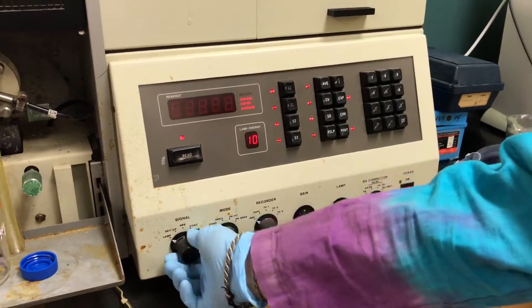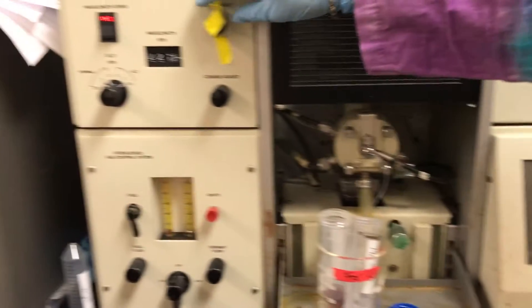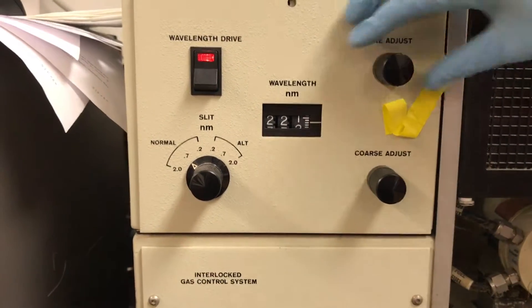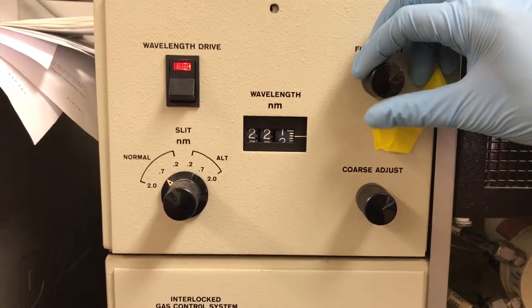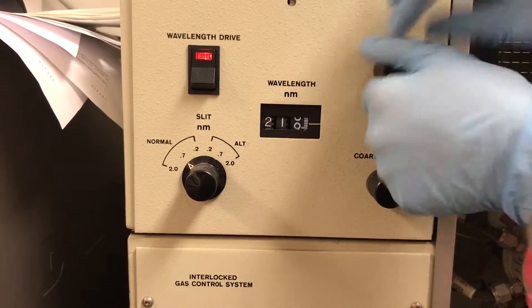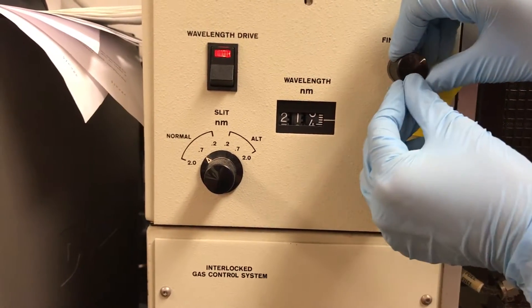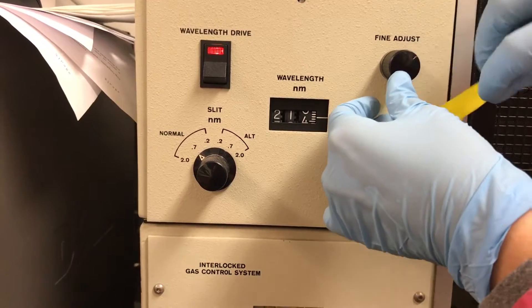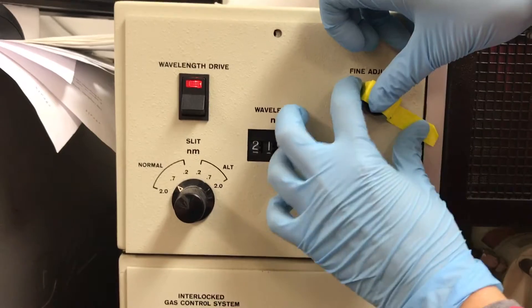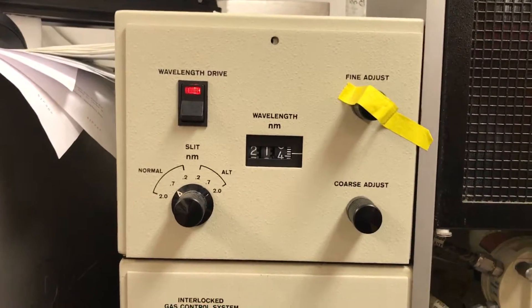Next, change the signal knob to setup. Come over here and adjust the wavelength for whatever wavelength your element absorbs at. In this case, zinc absorbs at 213.9. Use the very, very sophisticated stabilization tape to hold it in place.